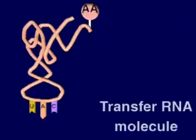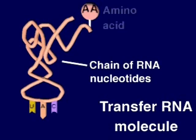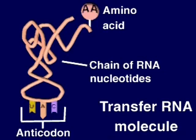In translation, the transfer RNA molecule only recognizes one amino acid, which bonds to the top of the molecule. At the bottom, there are three nitrogen bases called anti-codons, which pair up with messenger RNA codons during translation.